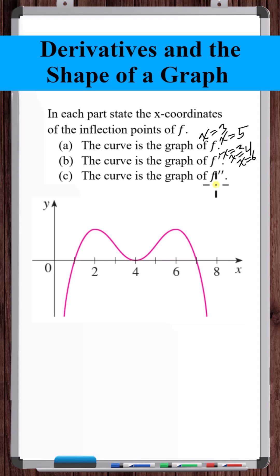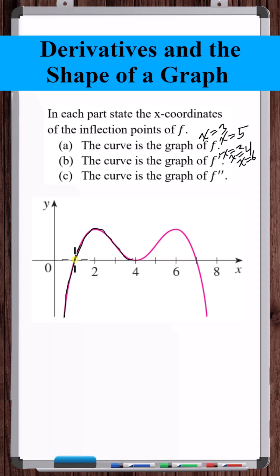Part C: the curve is the graph of f double prime. So if this is f double prime, then this is easy. Where this is positive, the curve is concave up; where negative, concave down. It goes negative, switches to positive, stays positive, then there's an x-intercept but it doesn't change signs — so that is not an inflection point — then switches to negative. So the inflection points are at x equals 1 and x equals 7.